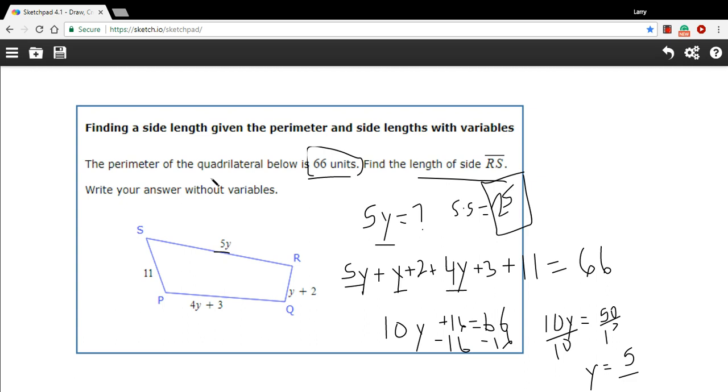So that's a little bit of work with finding a side length when you're given a perimeter and the other sides in terms of variables.